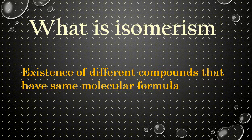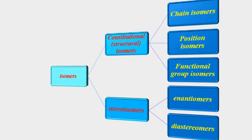Isomerism is the existence of different compounds that have the same molecular formula. Mainly, isomers can be divided into two groups: constitutional isomers, also called structural isomers, and stereoisomers.